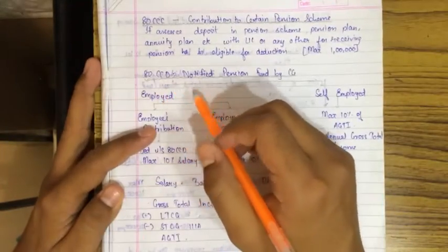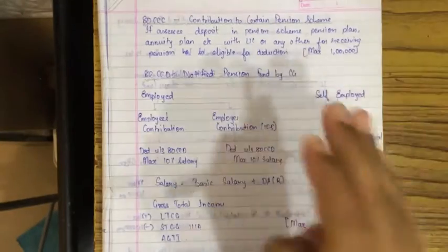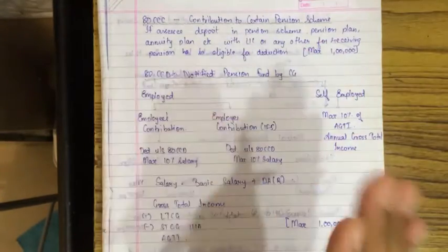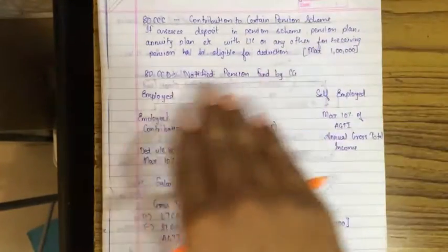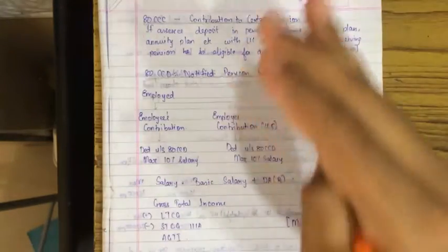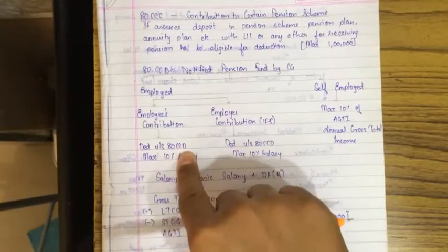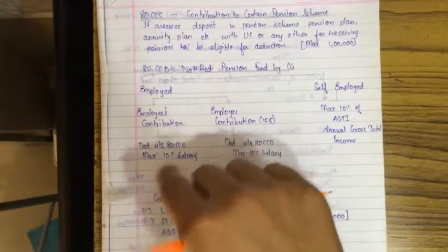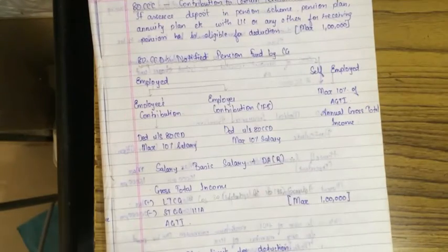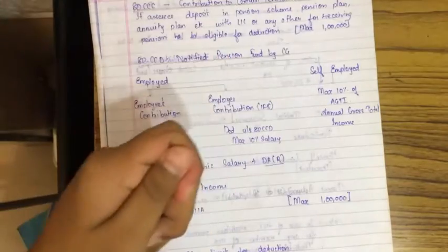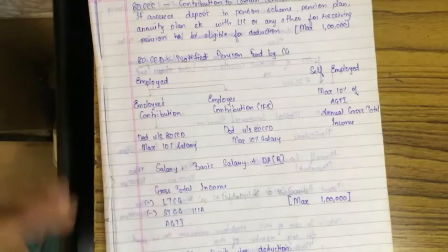I hope 80C is written. We will start with 80CCD - Notified Pension Funds by Central Government. If the assessee is employed, this is a fund. If the assessee is employed, an employee means the assessee himself is contributing in this fund, then he will get deduction under Section 80CCD maximum of 10% of his salary. Salary means basic salary plus dearness allowance recognized. Recognized means that he has actually received in his hands, not book entry, actually received.